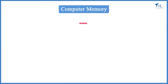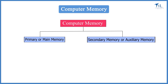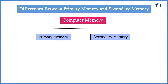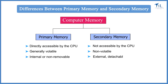Most computers have two types of memory: primary memory, or main memory, and secondary memory, or auxiliary memory. Primary memory is directly accessible by the CPU, whereas secondary memory is not. Primary memory is generally volatile and holds data for short periods of time. Secondary memory is non-volatile and holds data until it is deleted or overwritten. Primary memory is internal or non-removable, whereas secondary memory is external, detachable, and portable.